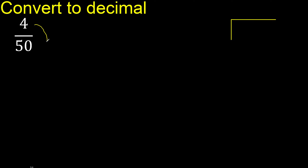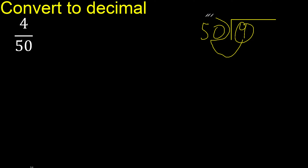4 divided by 50. 4 is less than 50, therefore complete with 0. Here: 0 point.